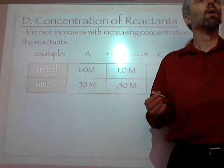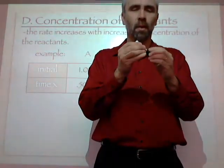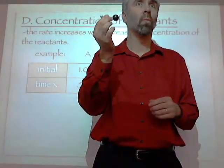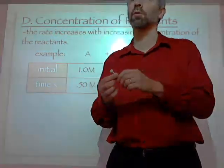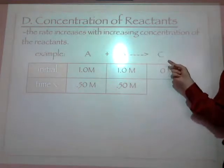One carbon atom, one oxygen atom, make how many carbon monoxides? One. See, one plus one doesn't equal two when it comes to chemical reactions. 1A plus 1B gives me 1C.